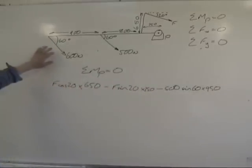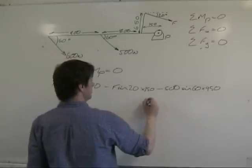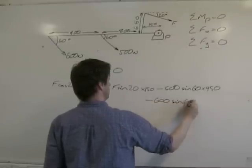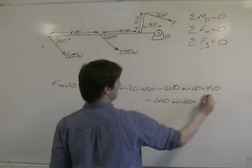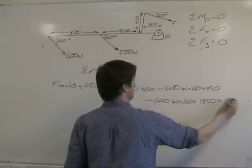The final component comes from 600 newtons. Again, anti-clockwise, so it's minus 600 sin 60 times 1850, and all that equals zero.